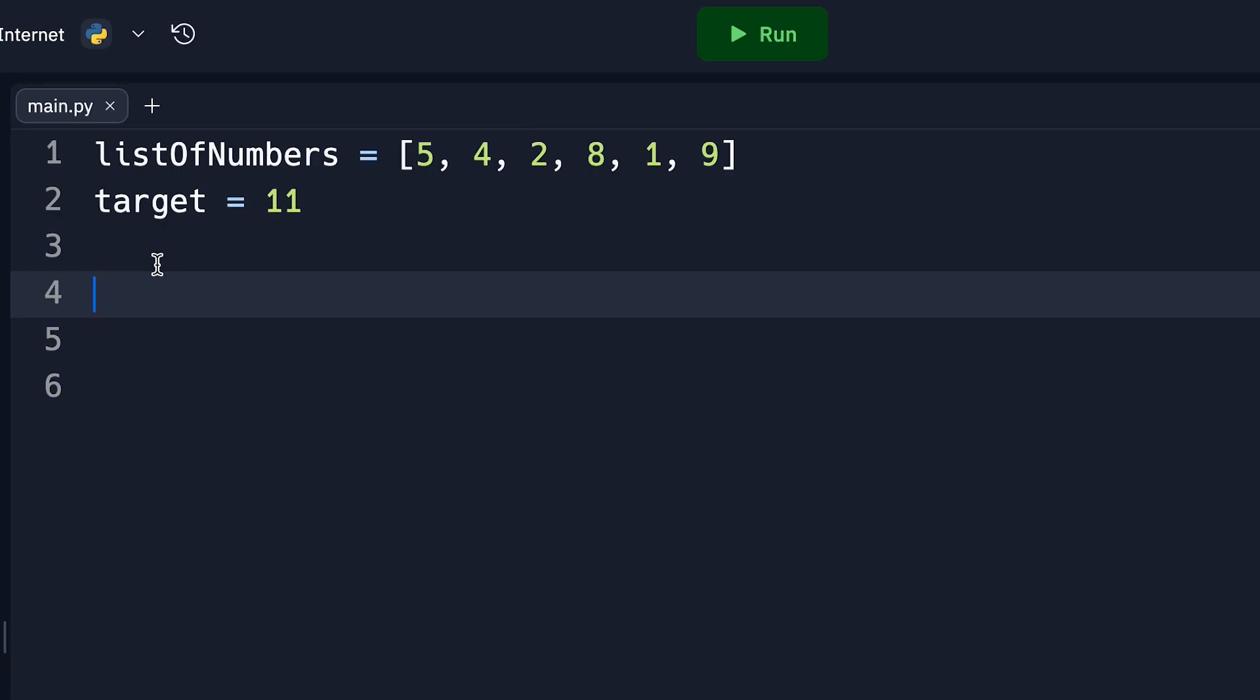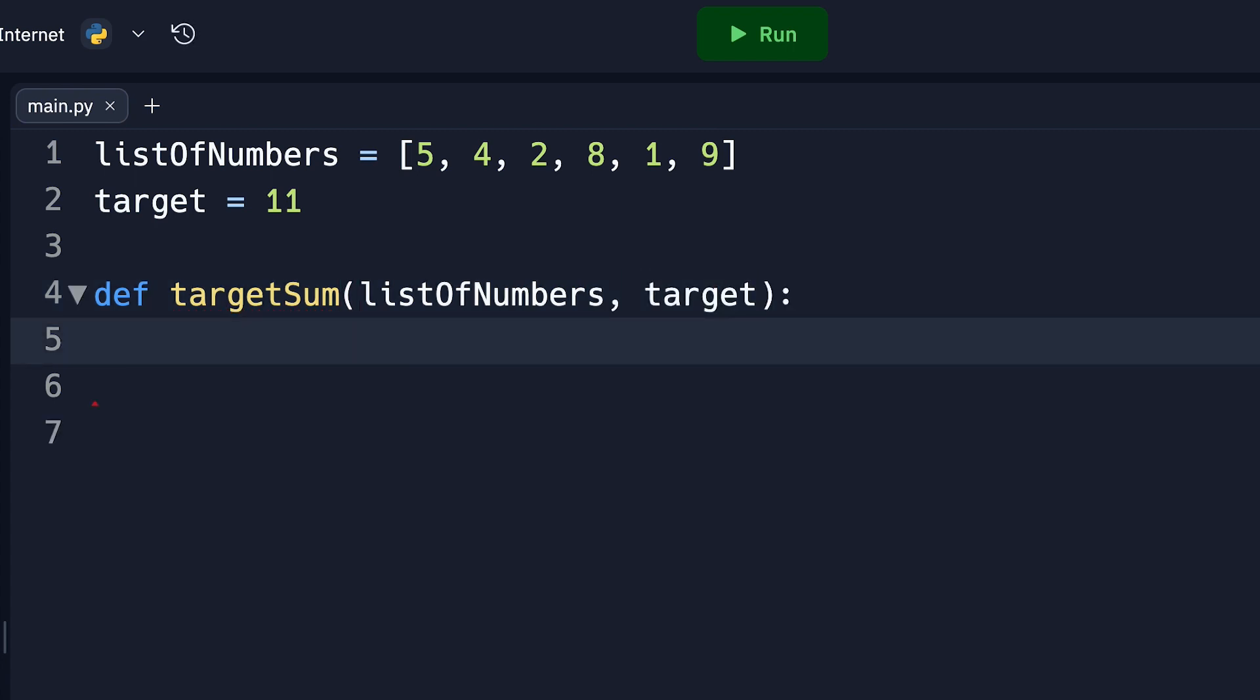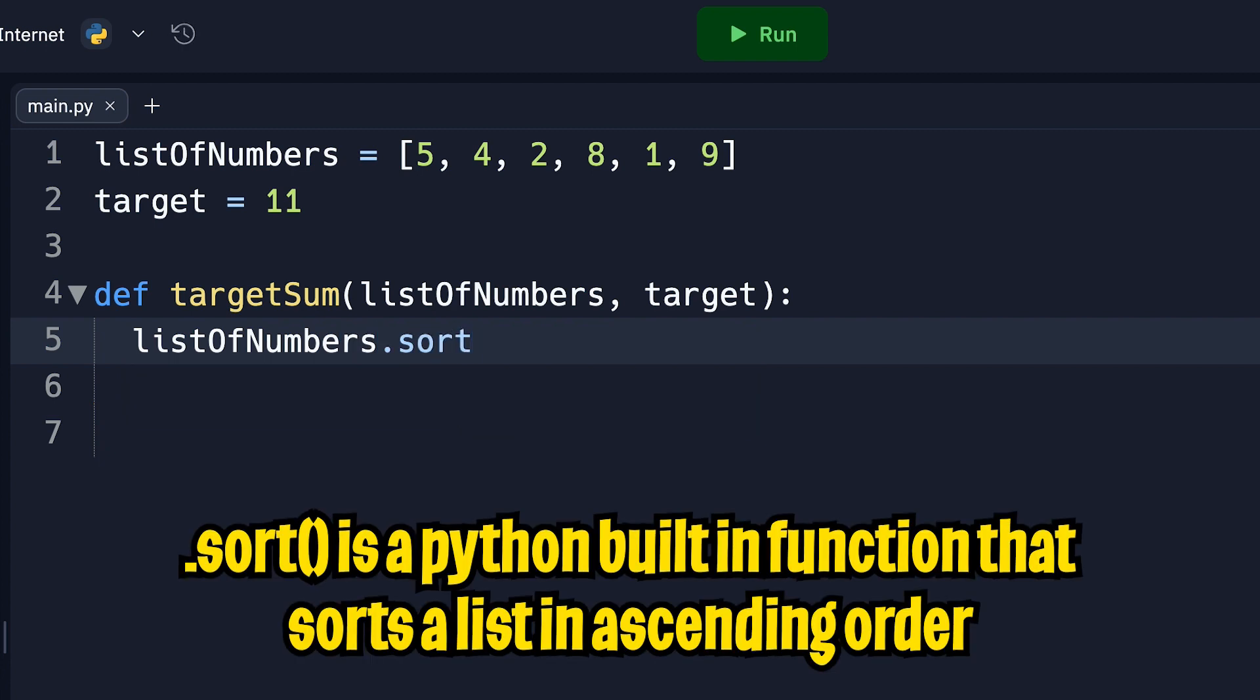Now to the fun part. Let's turn this to code. So first, let's create a function. So let's do define target sum, and this will take two parameters, a list of numbers and a target. So first, we want to sort the list. So all we have to do is type list of numbers and do dot sort.